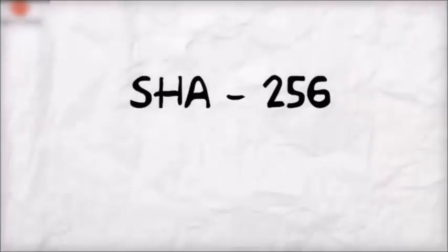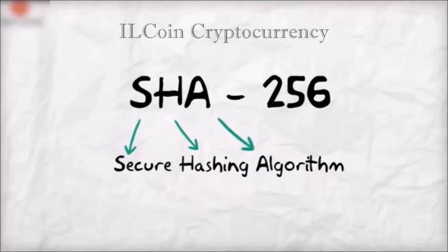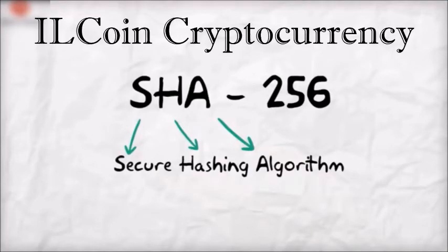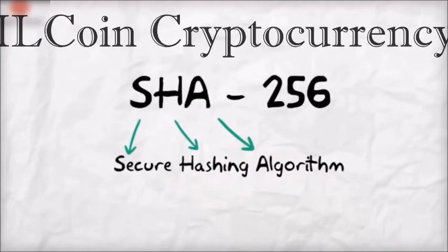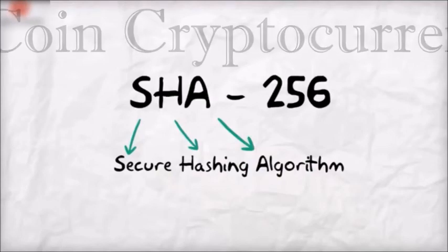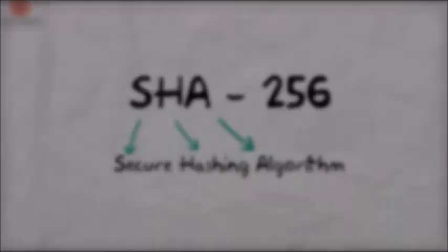The SHA-256, or Secure Hash Algorithm 256, is just a specific way of hashing — the same way we could have named our previous example the '99Bitcoins hashing method.' Using hashing helps the Bitcoin network stay immune to alteration and fraud.